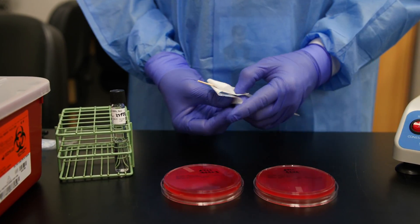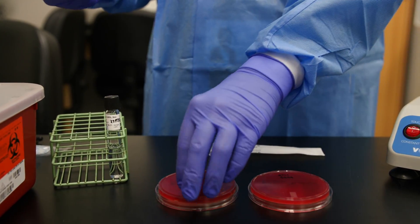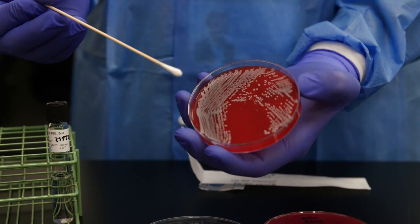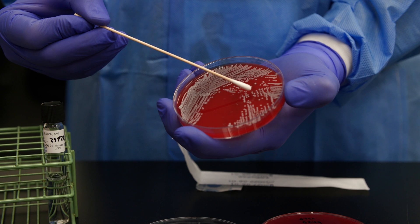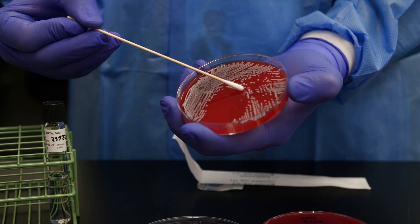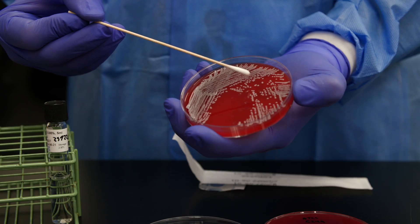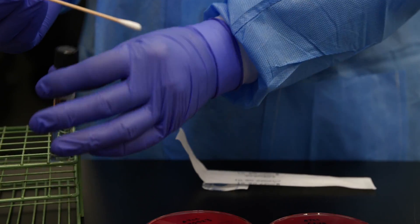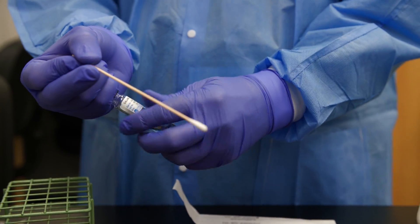To begin, using aseptic technique, use a sterile cotton swab and touch 3 to 5 well-isolated colonies. The number of colonies will vary depending on the particular organism you are working with. In other words, if the colonies are small, then you will need to pick up more of them.